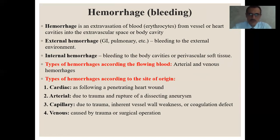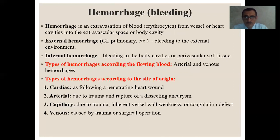Now let us discuss about hemorrhage, or bleeding. Hemorrhage is an extravasation of blood — specifically erythrocytes — from vessels or heart cavities into the extravascular space or body cavity. From histology, there are three formed elements of blood: the red blood cells or erythrocytes, the white blood cells or leukocytes, and platelets or thrombocytes. In normal physiological conditions, leukocytes or white blood cells can leave the blood stream — they circulate in peripheral blood for a period and then leave. But red blood cells in normal conditions never leave the blood stream. If they leave the blood, we call it hemorrhage.